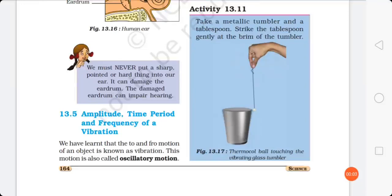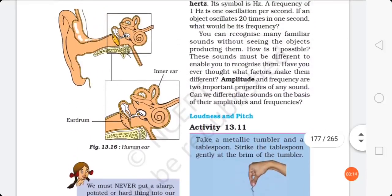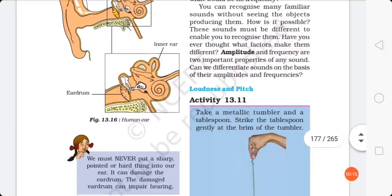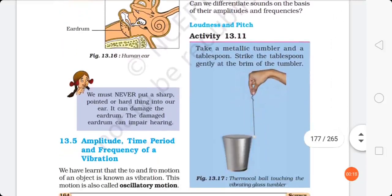So students, after watching both videos, are you clear with how human ear works? Which different parts are there in human ear? How sound enters from the outer part of ear and reaches to our brain and we are able to listen?